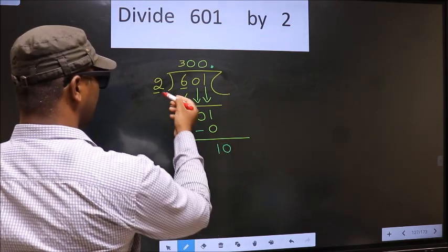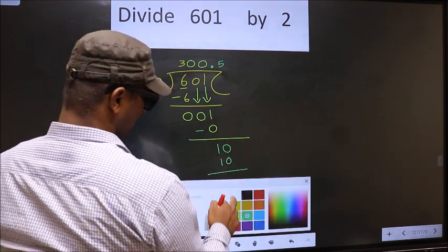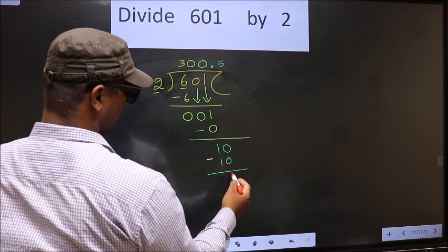So 10, when do we get 10 in 2 table? 2, 5, 10. Now you subtract. 10 minus 10, 0.